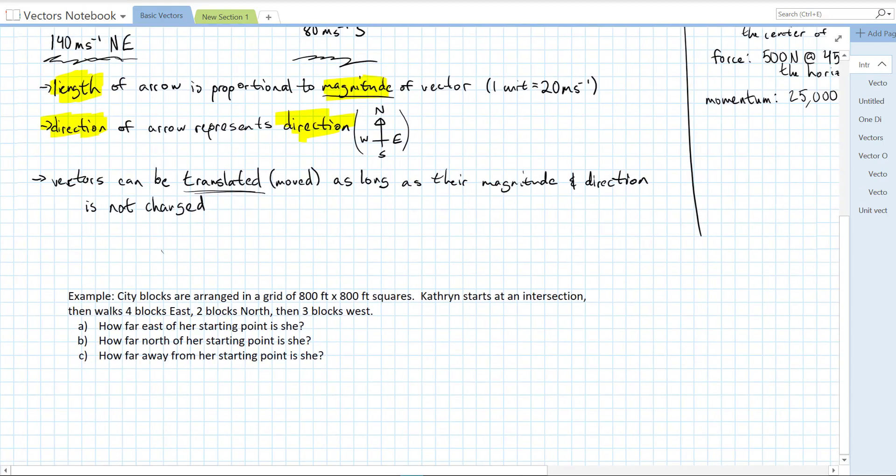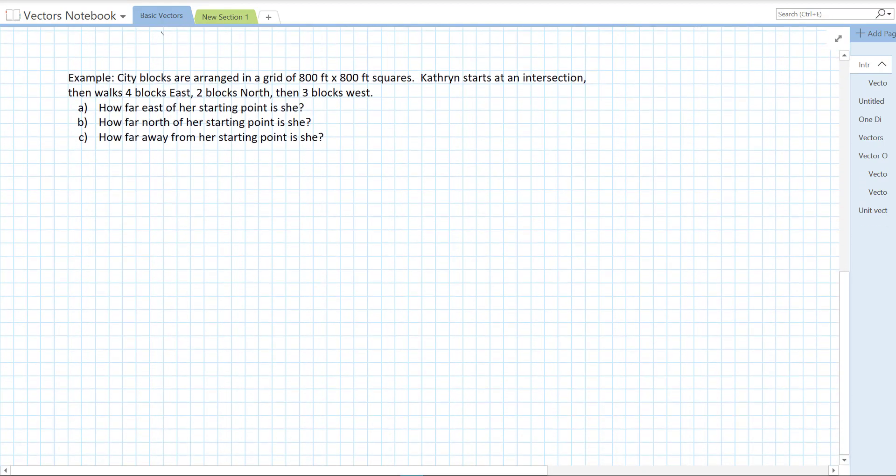Let's do one example. City blocks are arranged in a grid of 800 feet by 800 feet squares. Catherine starts at an intersection, then walks four blocks east, two blocks north, and three blocks west. How far east of her starting point is she? How far north of her starting point is she? How far away from her starting point is she? So this is going to be a vector problem. We need more than just the distances she traveled, so I'm going to sketch out a diagram.